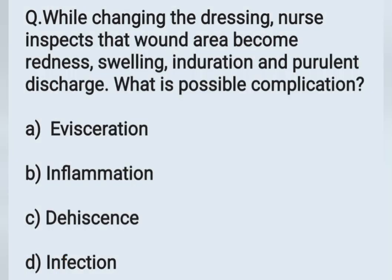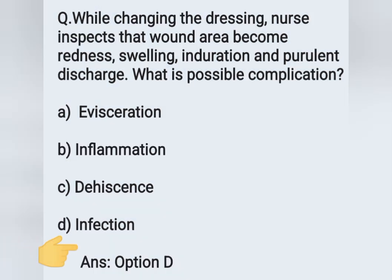The next question: while changing the dressing, the nurse inspects that the wound area has redness, swelling, induration, and purulent discharge. What is the possible complication? Options: A - evisceration, B - inflammation, C - dehiscence, D - infection. If the wound area has swelling, induration, discharge, and redness, it is due to infection. Option D is the correct answer.